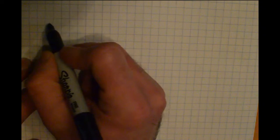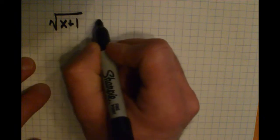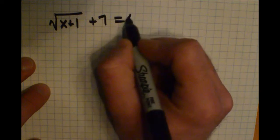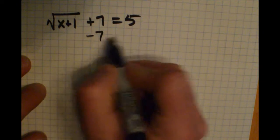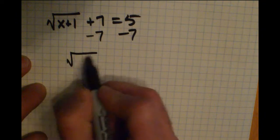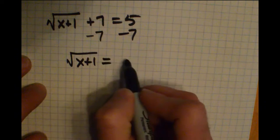I want to take a look at another example here. Something that could happen as you're solving a radical equation. So let's say I have the square root of x plus 1 plus 7 is equal to 5. Well, if I want to solve for x, first thing I might do is subtract 7 from both sides. Square root x plus 1 is equal to negative 2.